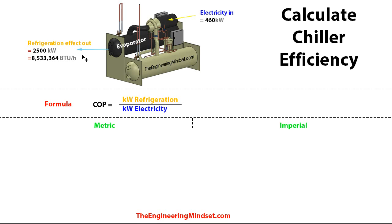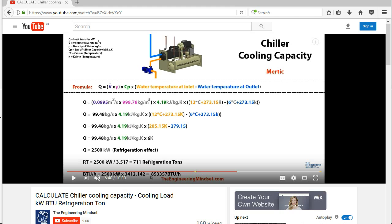The second part you need is the refrigeration effect — so how much cooling are you getting out of this chiller? We want the units in kilowatts, but obviously the imperial units will be in BTUs per hour. If you don't know how to calculate this, I highly recommend you check out our other video just before this, which is how to calculate the chiller cooling capacity, the cooling load, kilowatts, BTUs, and refrigeration tons.